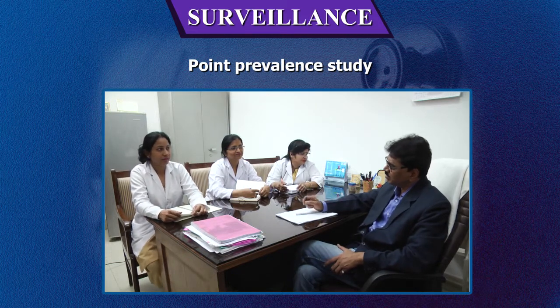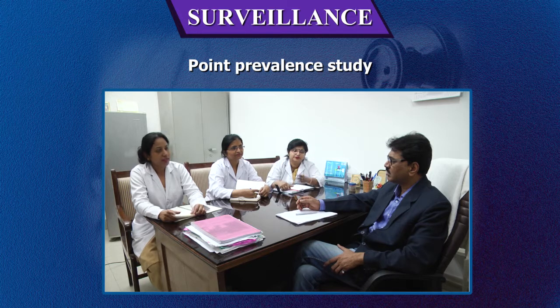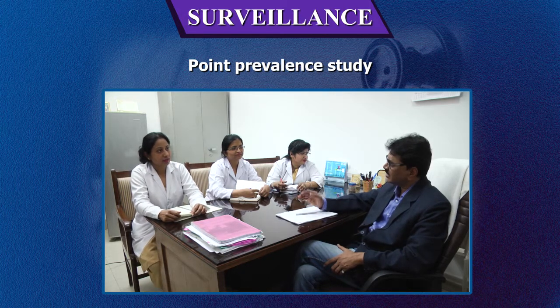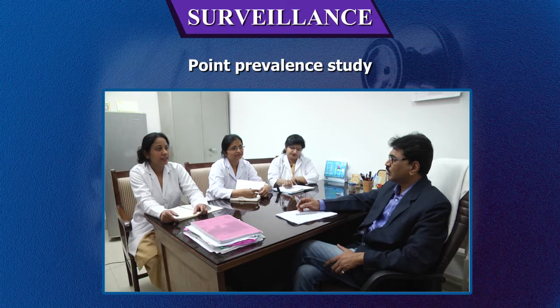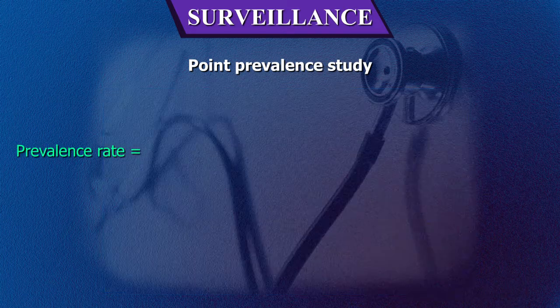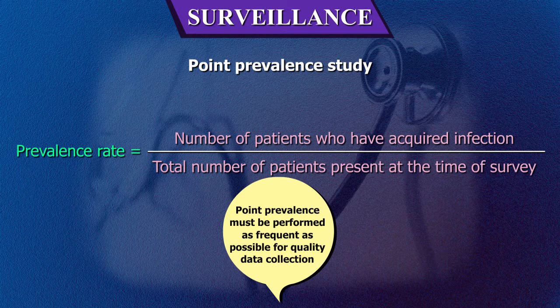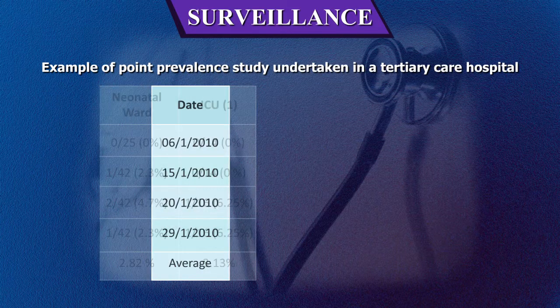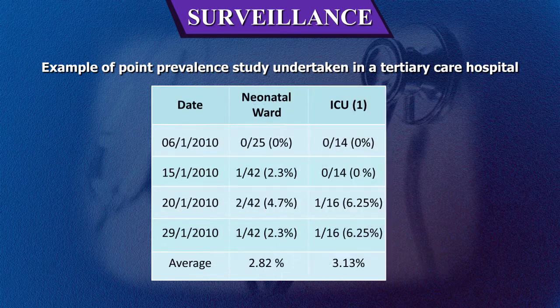For a point prevalence study, the infection control team must visit all vulnerable and high-risk areas like ICUs and post-operative wards at least once a week and examine the case sheets of all patients in detail to ensure maximum data capture. Prevalence rate is calculated as: number of patients who have acquired infection divided by total number of patients present at the time of survey. An example includes date, neonatal ward, ICU1, ICU2, post-operative ward, and obs and gynae.